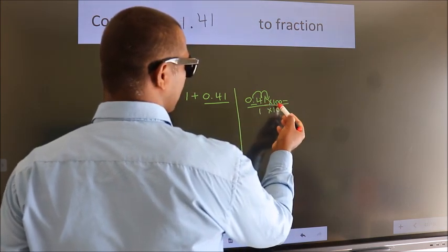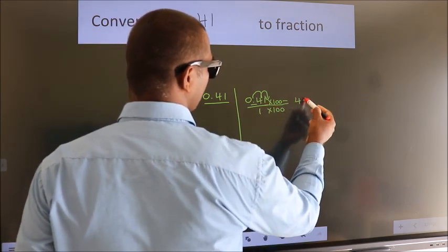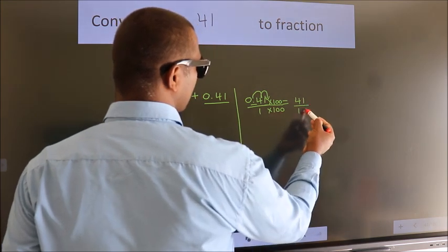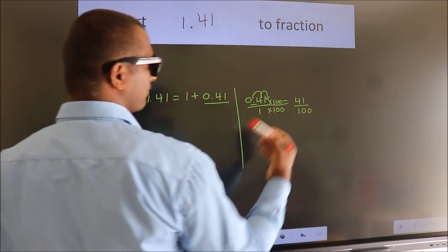0.41 times 100 equals 41. 1 times 100 equals 100. This is the fraction we got: 41/100.